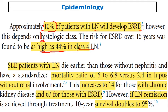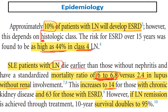To further clarify the importance of kidney involvement: mortality in patients with lupus nephritis is higher than in those without nephritis. The mortality ratio approaches 6 to 7 in lupus nephritis patients, versus 2.4 in lupus patients without renal involvement. This increases to 14 if the patient develops chronic kidney disease, and to 63 for those reaching end-stage renal disease.